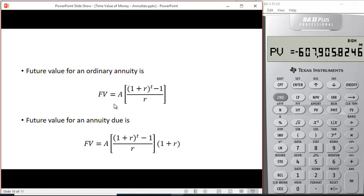This is the formula for the future value of an annuity. It's the annuity times in brackets one plus the interest rate raised to the T power minus one divided by the interest rate. The future value of an annuity due is the same formula times one plus R.